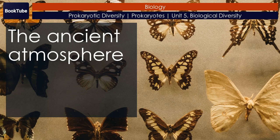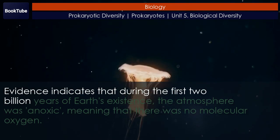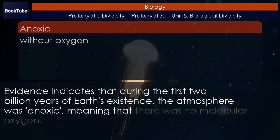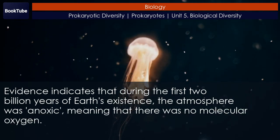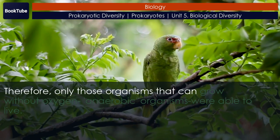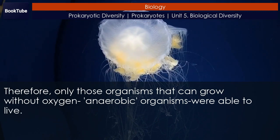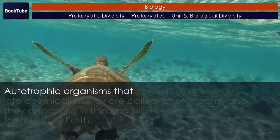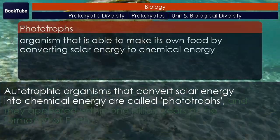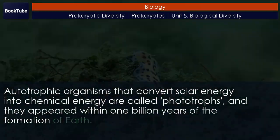The ancient atmosphere. Evidence indicates that during the first 2 billion years of Earth's existence, the atmosphere was anoxic, meaning that there was no molecular oxygen. Therefore, only those organisms that can grow without oxygen — anaerobic organisms — were able to live. Autotrophic organisms that convert solar energy into chemical energy are called phototrophs, and they appeared within 1 billion years of the formation of Earth.